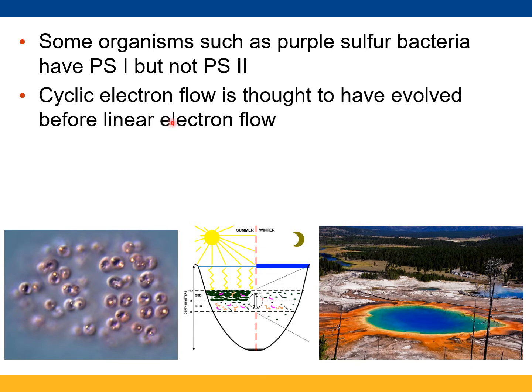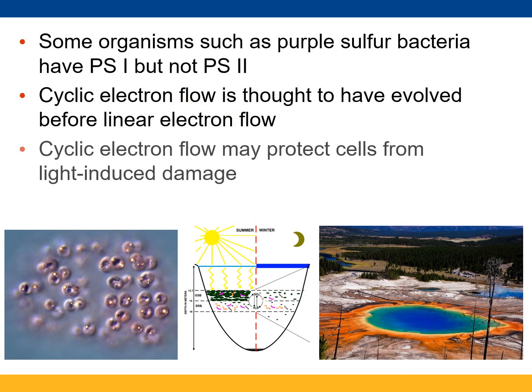We think that cyclic electron flow actually predates linear electron flow. It may be a product from light-induced damage. What we do know is it's making excess ATP — that's for sure. We don't know entirely, but we have some guesses.